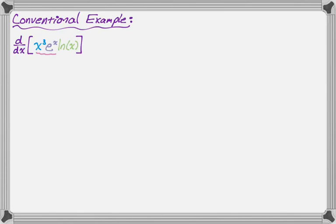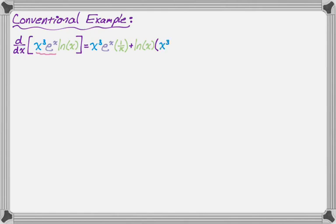I'm going to group these together. With the product rule, it's going to be the first, which is x cubed times e to the x, times the derivative of the second — so that's one over x — plus the second, which is natural log of x, times the derivative of the first. I'm just going to use the product rule on x cubed times e to the x. That's going to give me first times derivative of the second — x cubed times e to the x — plus second times derivative of the first — e to the x times 3x squared.